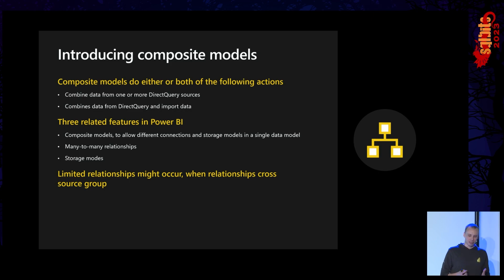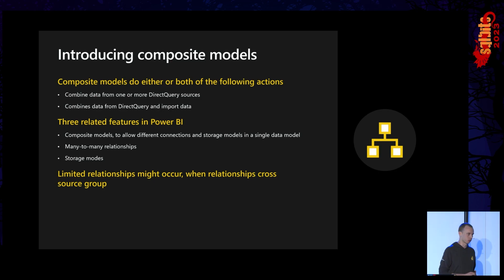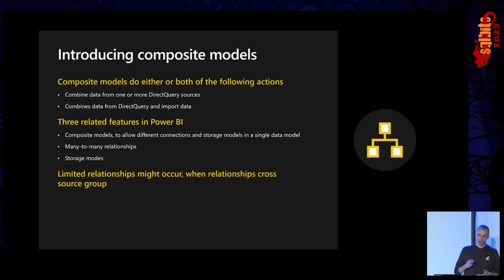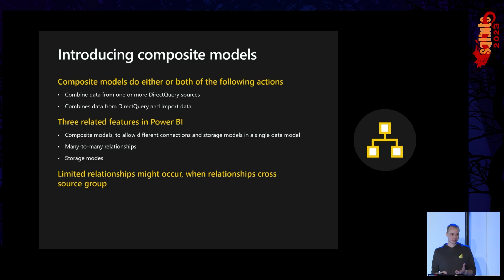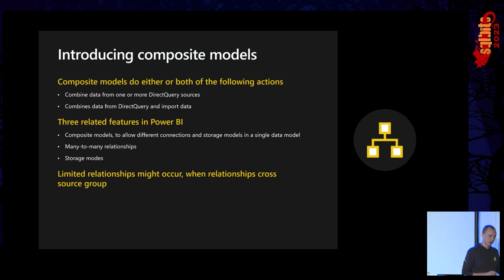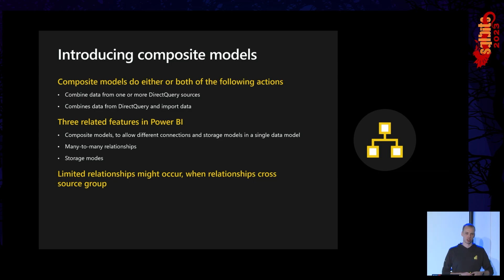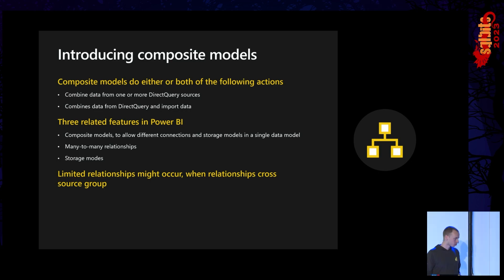When working with composite models keep in mind the different storage modes, many-to-many relationships, and limited relationships. As soon as you cross a relationship from an Import to a Direct Query table it becomes a limited relationship — which is not you being in the friend zone, it's different. A limited relationship means an inner join is performed between both tables, whereas by default tables perform an outer join. That's why you normally get that blank row when dimension values don't match the fact table — with a limited relationship that blank row won't be there.